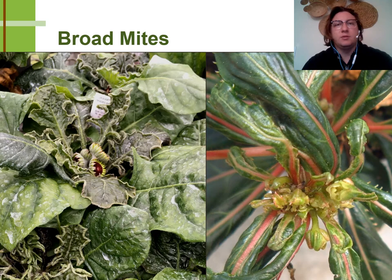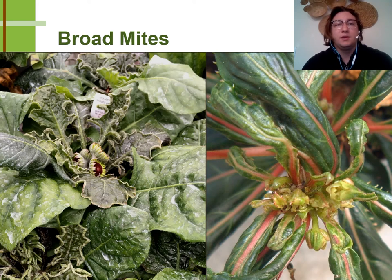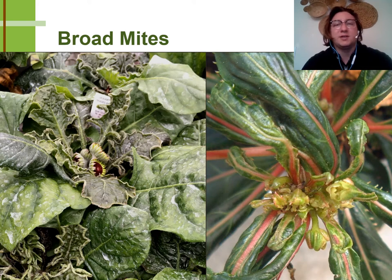Broad mites are one of the most difficult pests to identify because they cannot be seen with the naked eye. They do require additional magnification and are great at hiding in the growing tips of plants. Most of the time when we see the damage they cause, populations have already gotten out of control. As you can see, the damage worsens as the newer growth develops because that is where the broad mites like to feed, on new emerging foliage and flowers. With their piercing, sucking mouth parts, they inject a toxin into the plant as they feed, which causes excessive darkening, hardening, and distortion of the tissue.